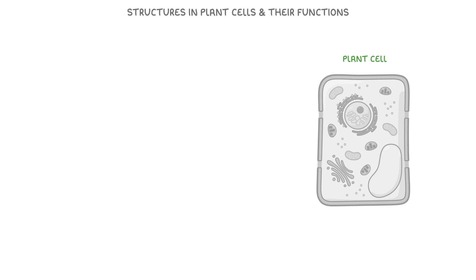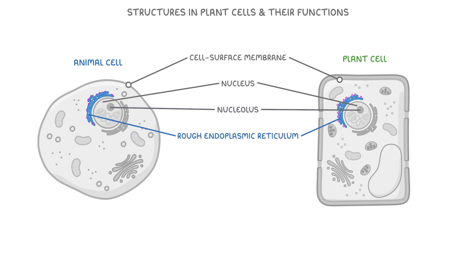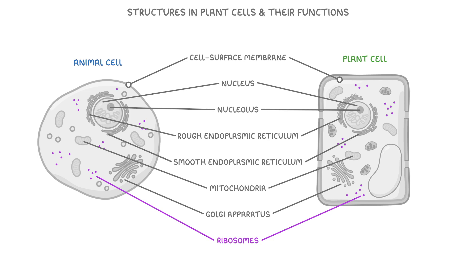Let's begin with the different structures in plant cells and their functions. Plant cells like this one have many organelles that are also found in animal cells. They both have a cell surface membrane, nucleus which includes a nucleolus, rough endoplasmic reticulum and smooth endoplasmic reticulum, mitochondria, a Golgi apparatus, and also free ribosomes as well.